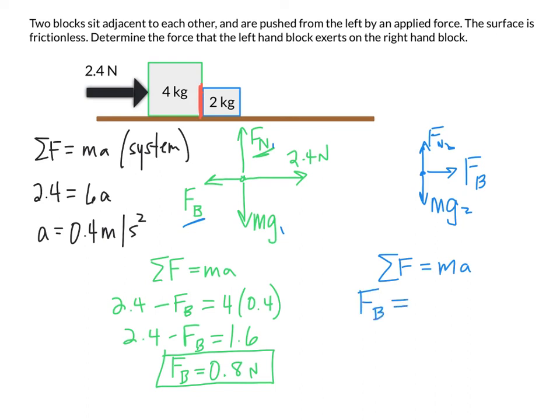Okay but now again I'm looking at the blue block so the mass is going to be 2 instead of 4 times my acceleration of 0.4 meters per second squared, and sure enough I get that same 0.8 newtons. Same force back and forth.